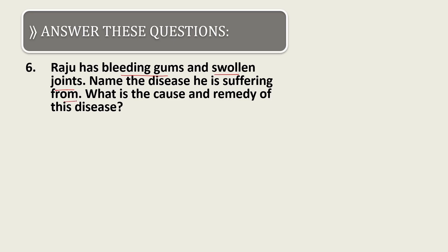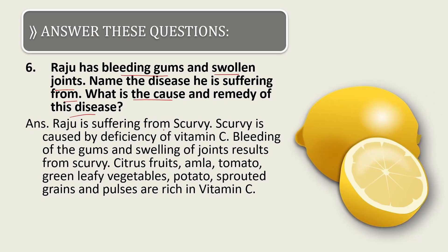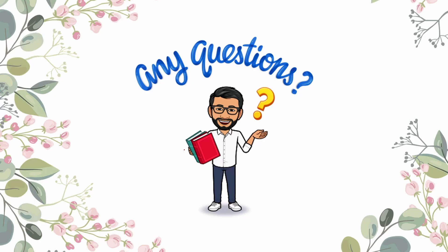The last question: Raju has bleeding gums and swollen joints — name the disease he is suffering from and what is its cause and remedy. Raju is suffering from scurvy. Scurvy is caused by deficiency of vitamin C, leading to bleeding gums and swelling of joints. Citrus fruits, amla, tomato, green leafy vegetables, potatoes, sprouted grains, and pulses are rich in vitamin C and can prevent this disease.